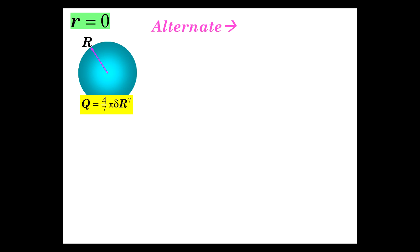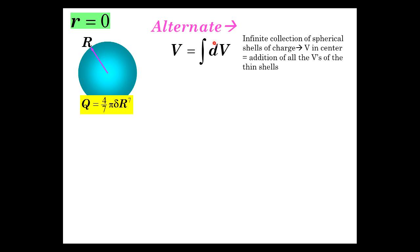Now I want to give you an alternate way to think about the potential at the center of a sphere. Potential is a scalar, so the potentials from all charges at different places in space simply add at the point in question — direction doesn't matter, they add. Similarly, we can find the potential at the center of the sphere by considering the sphere as an infinite collection of shells of charge, and adding up all the differential potentials from all the thin shells.